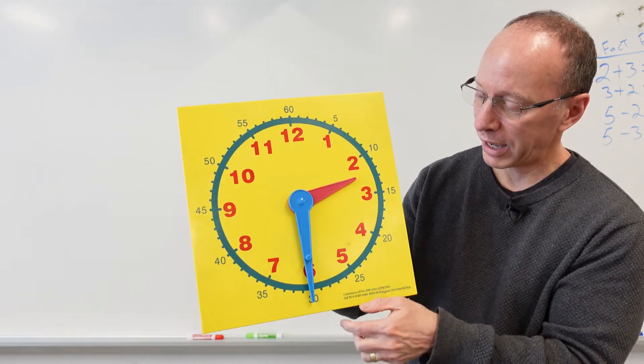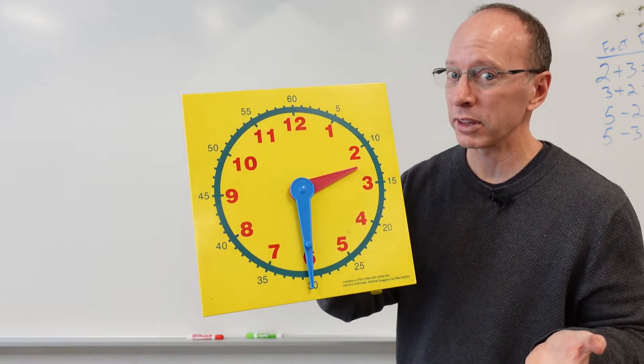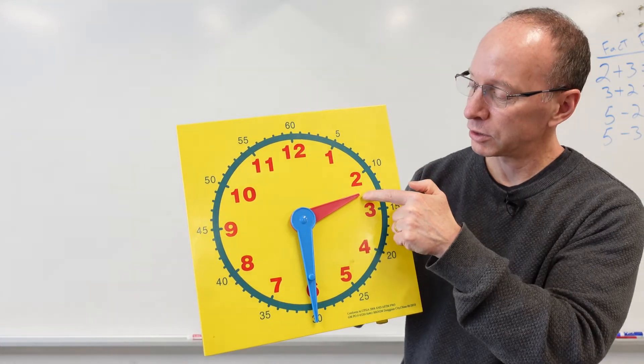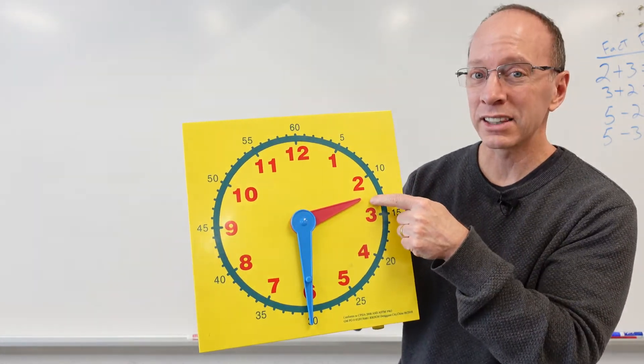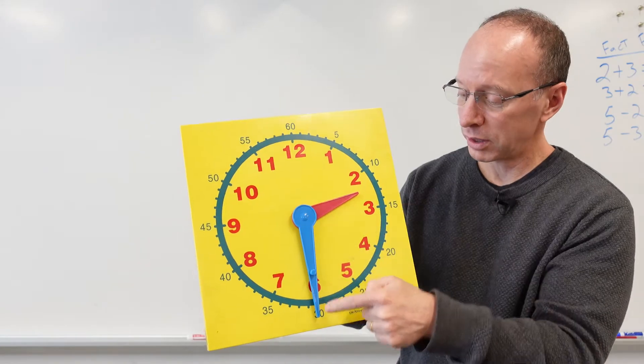All right. Now, the big hand is pointing down, so it's something 30, so it is 2:30. Remember, we want to always read the lady's hands first. 2:30.